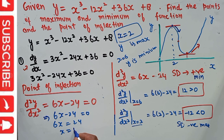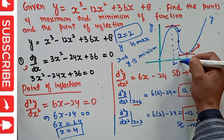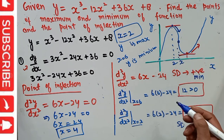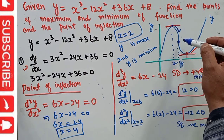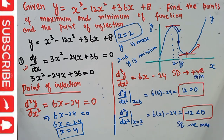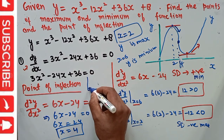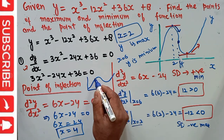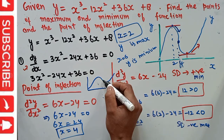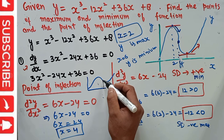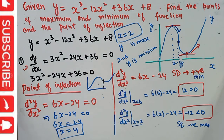Solving 6x - 24 = 0 gives 6x = 24, so x = 24/6 = 4. So when x = 4, the curve changes its nature from concave to convex. This is the point of inflection. At the point of inflection, the second derivative equals zero. We can see on the graph that up to a certain point the curve is concave, then it becomes convex — that transition point is the inflection point. The second derivative equals zero at that point.